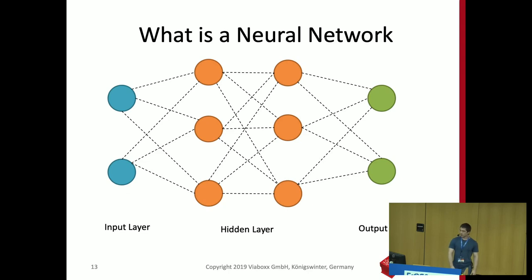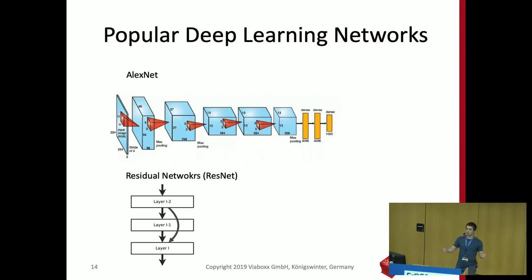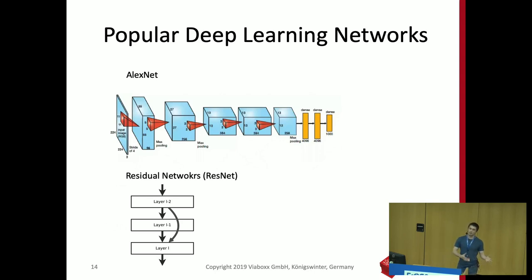Let's take a look at the most popular deep learning networks. The first was only eight layers deep — called AlexNet. It was a revolution because no one had ever built a neural network eight layers deep. That was in 2012. It won an image classification contest by a really large margin over other competitors. The world then realized that if you have more layers, you get more accuracy and better results.